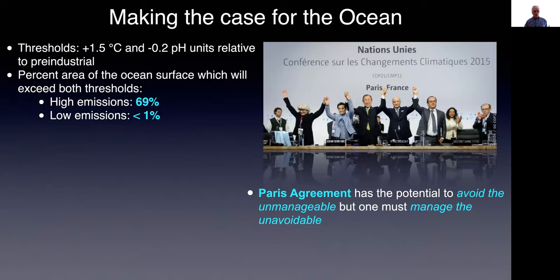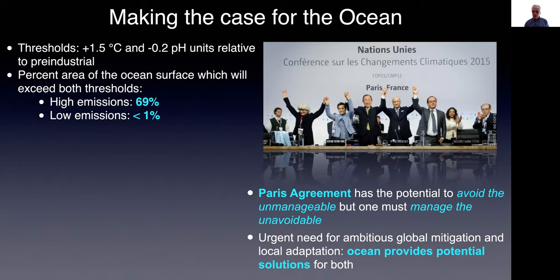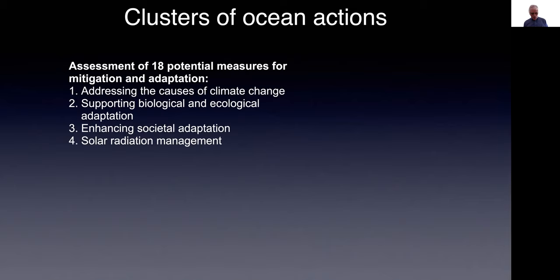When you look at the often-mentioned thresholds of plus 1.5 degrees and 0.2 pH units, the percent area of the ocean subject to those thresholds will be 69% with high emissions and only less than 1% with low emissions. This really shows that the Paris Agreement, launched and accepted in 2015, has the potential to avoid the unmanageable, but one must also manage the unavoidable, showing there is an urgent need for ambitious global mitigation and local adaptation — and the ocean provides solutions for both.